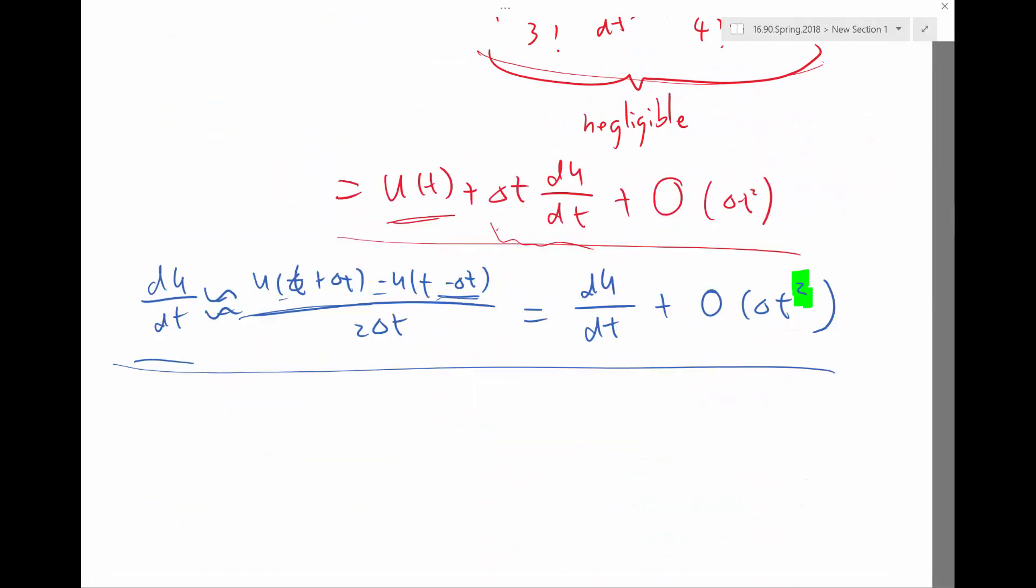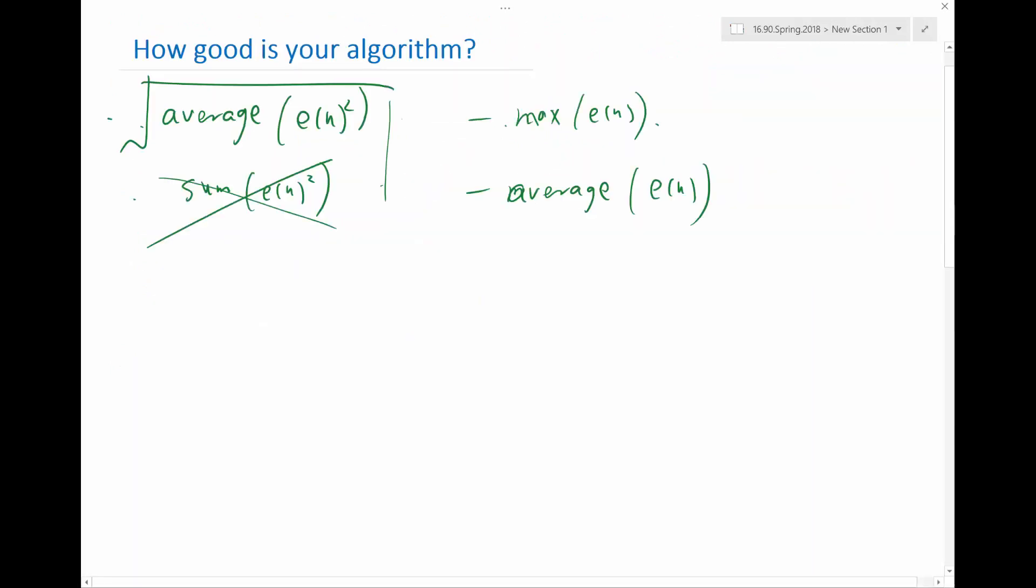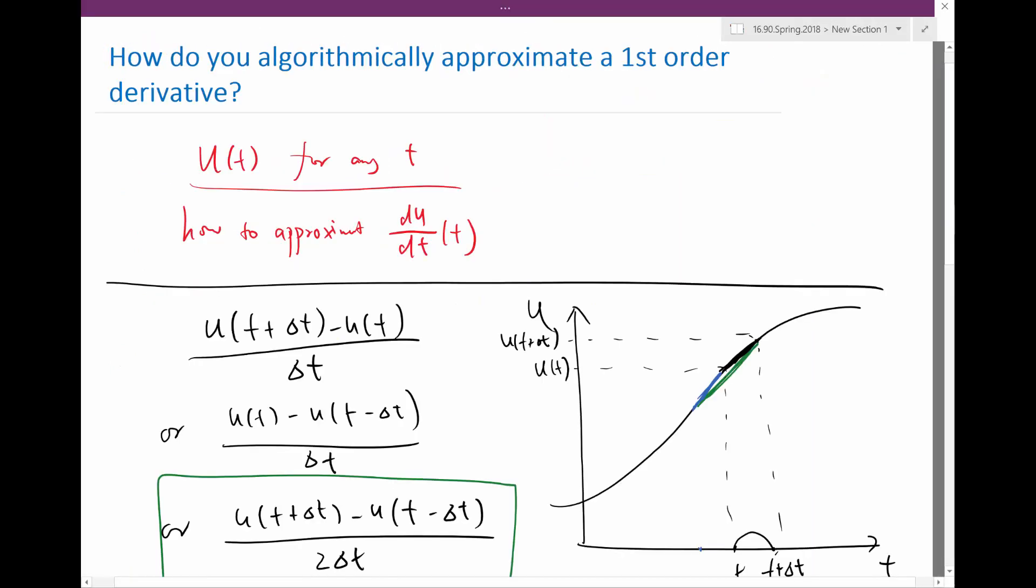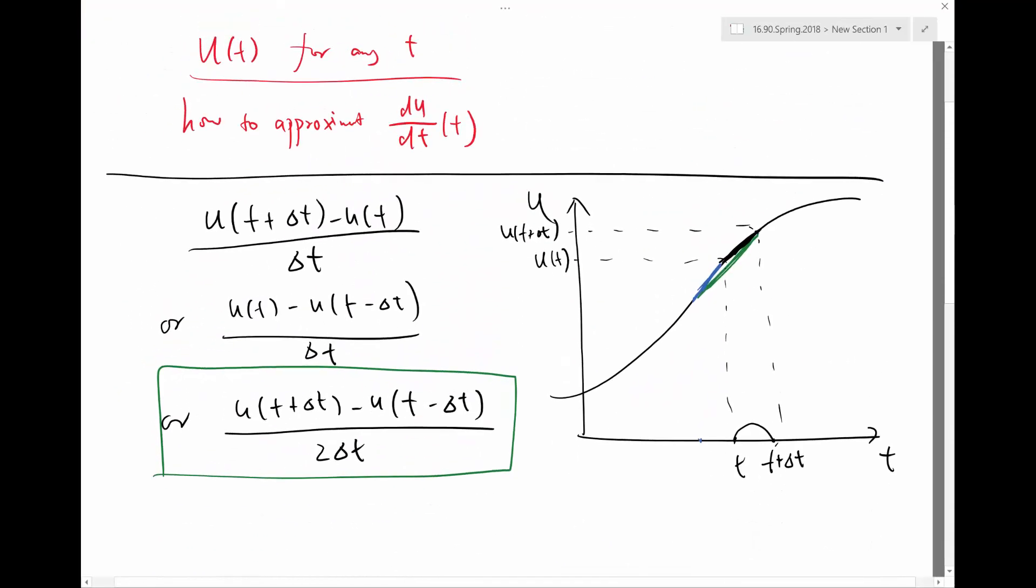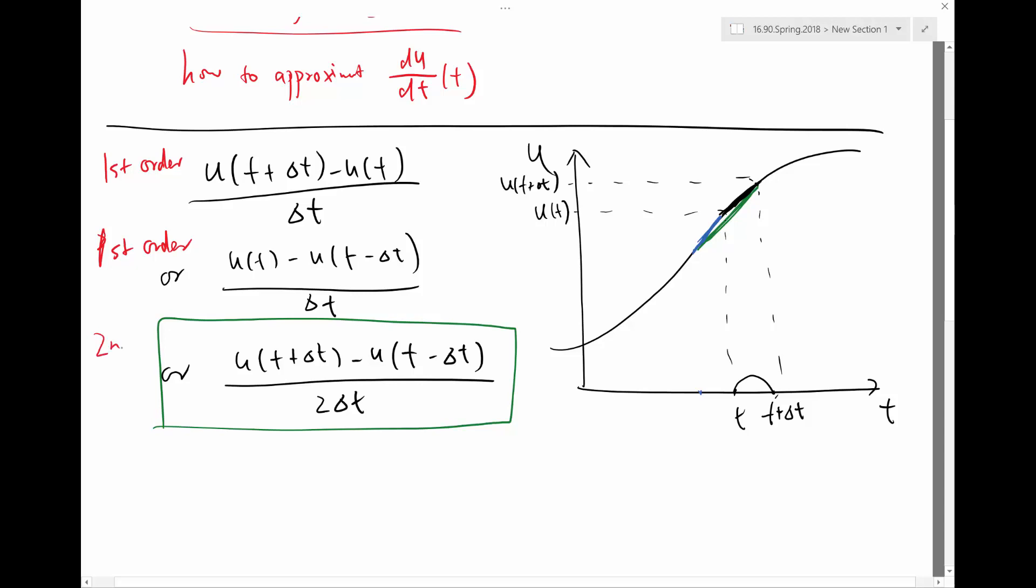So, in all these methods we came up with, we can now start to label. So, this is going to be a first order method. This, we didn't do any analysis, you can go back and convince yourself, this is actually a first order method too. And this method, which we have seen to be better from the computer, is a second order method.